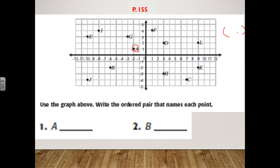Each point has two coordinates — we write the x first, then the y. For point A, look at the x value carefully — it's negative two. Then the y value ends at one. So the ordered pair for point A is negative two, one.